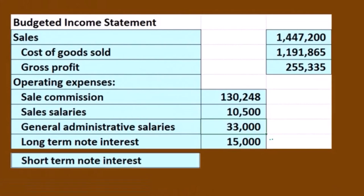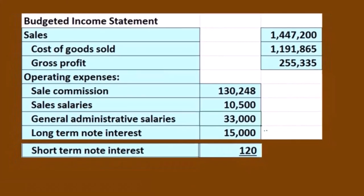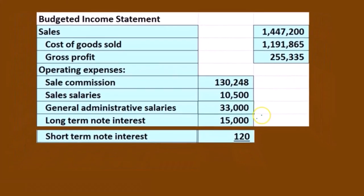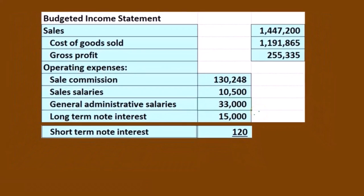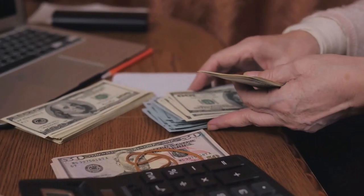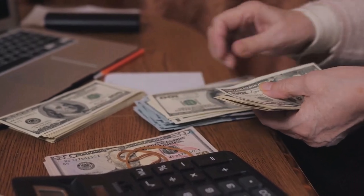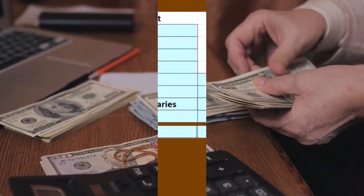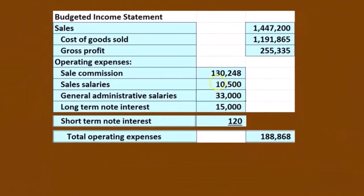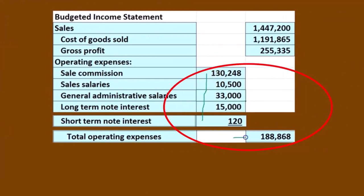Then we have the short-term note interest. We did that on the cash flow statement, so you could pick it up from the statement of cash flows where we calculated the interest on the short-term note. If we sum these items up — pulling them into the enter column and then out to the outer column — we have the total operating expenses of $188,868.